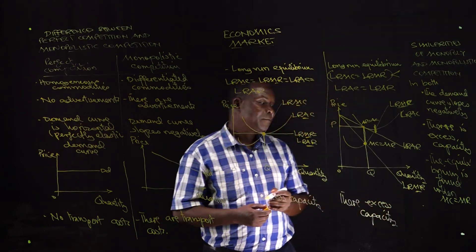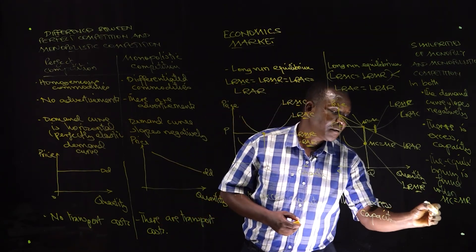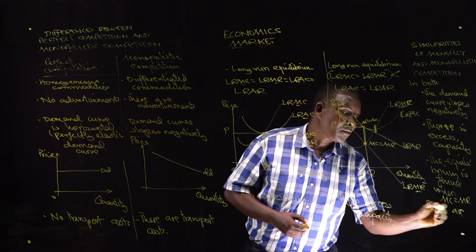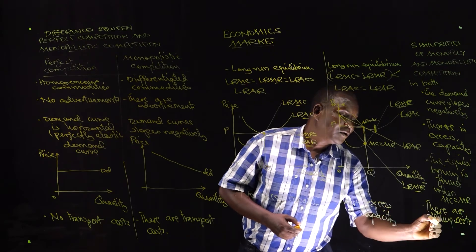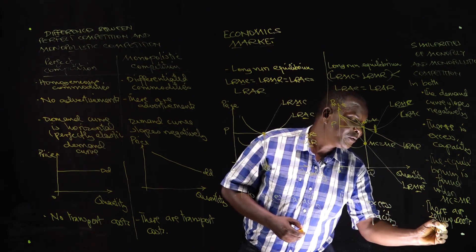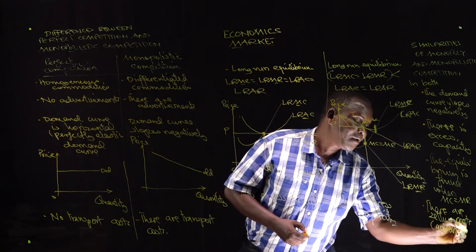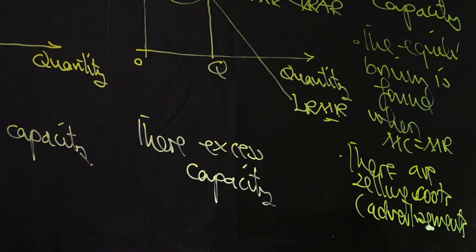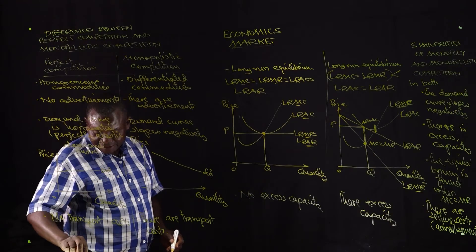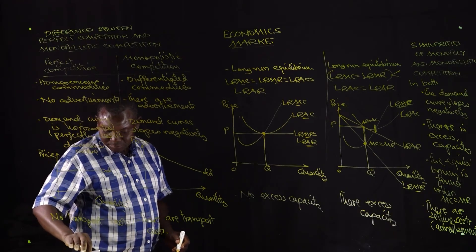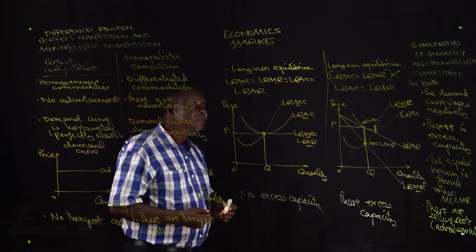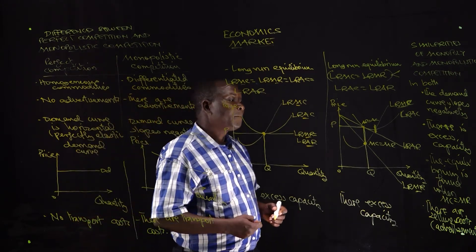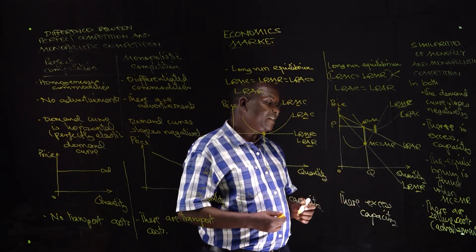And again, in both monopoly and monopolistic competition, there are selling costs — they all deal with advertisements and advertise for their products. These are the similarities.